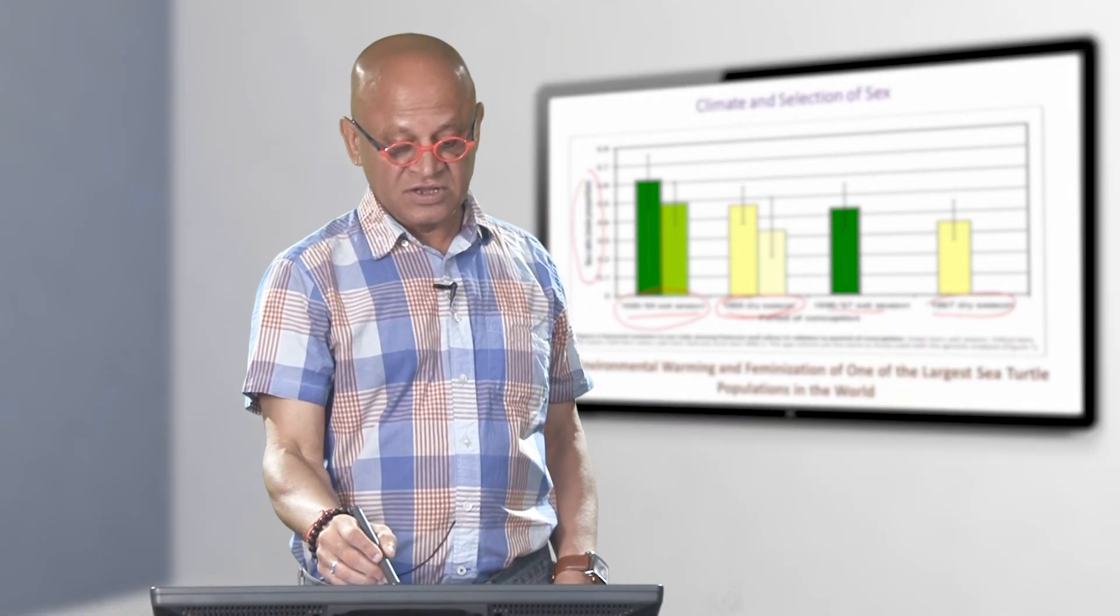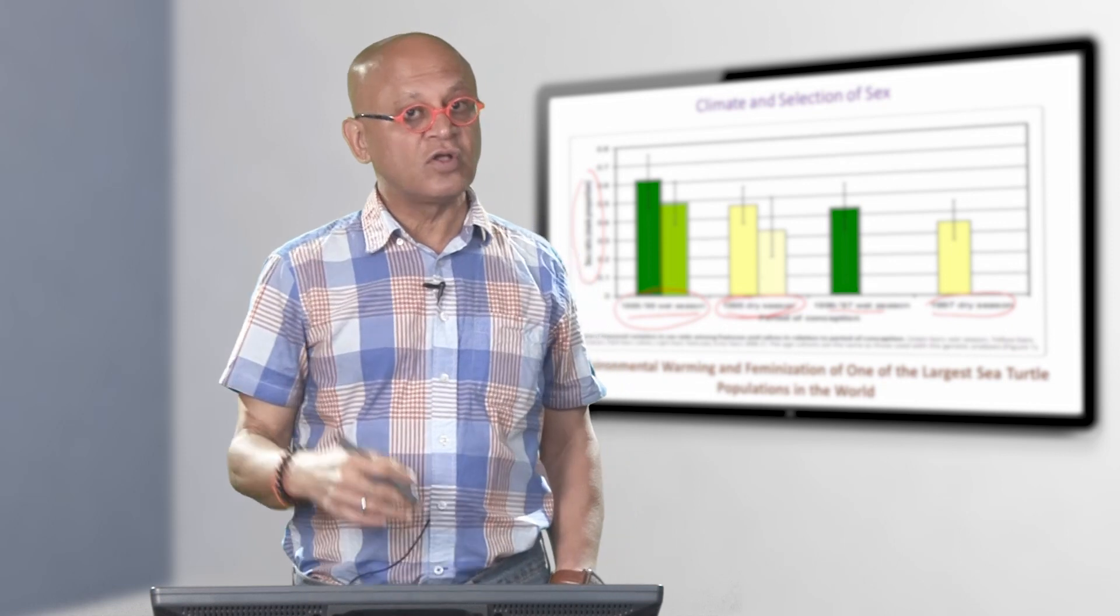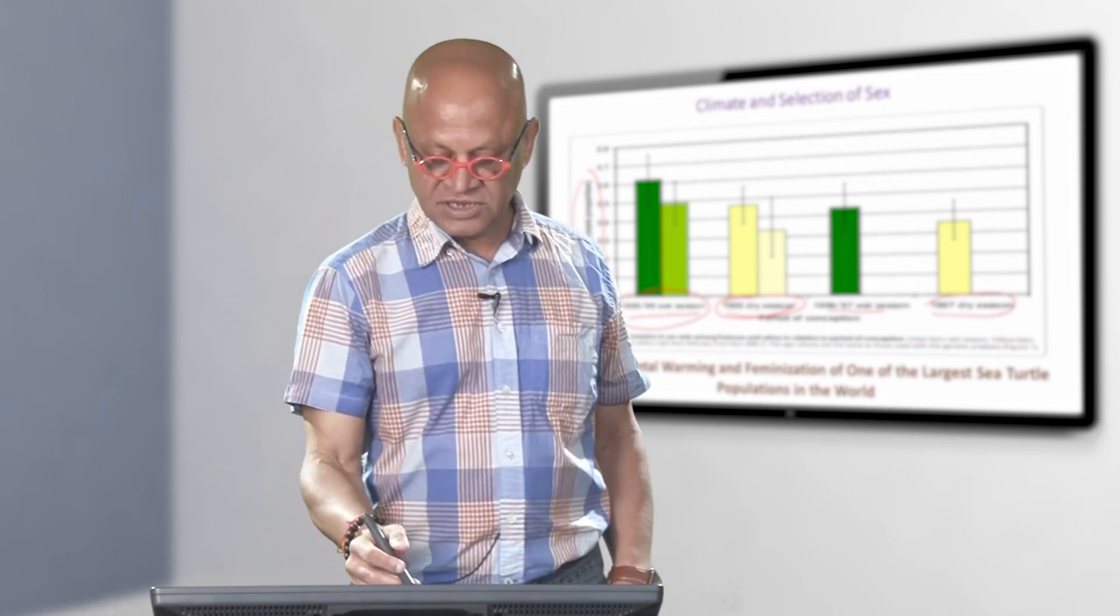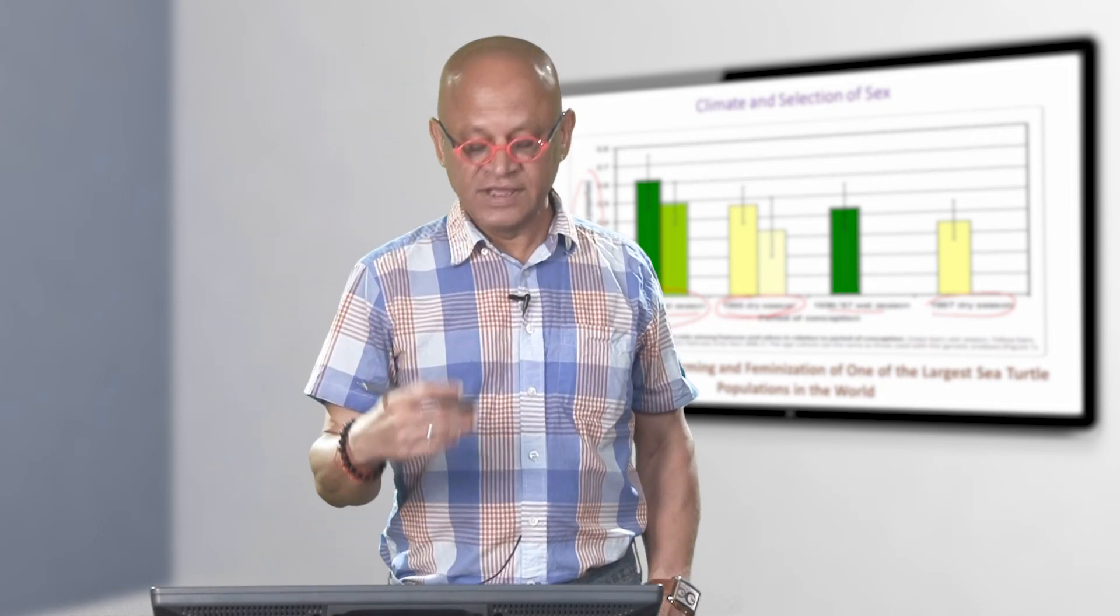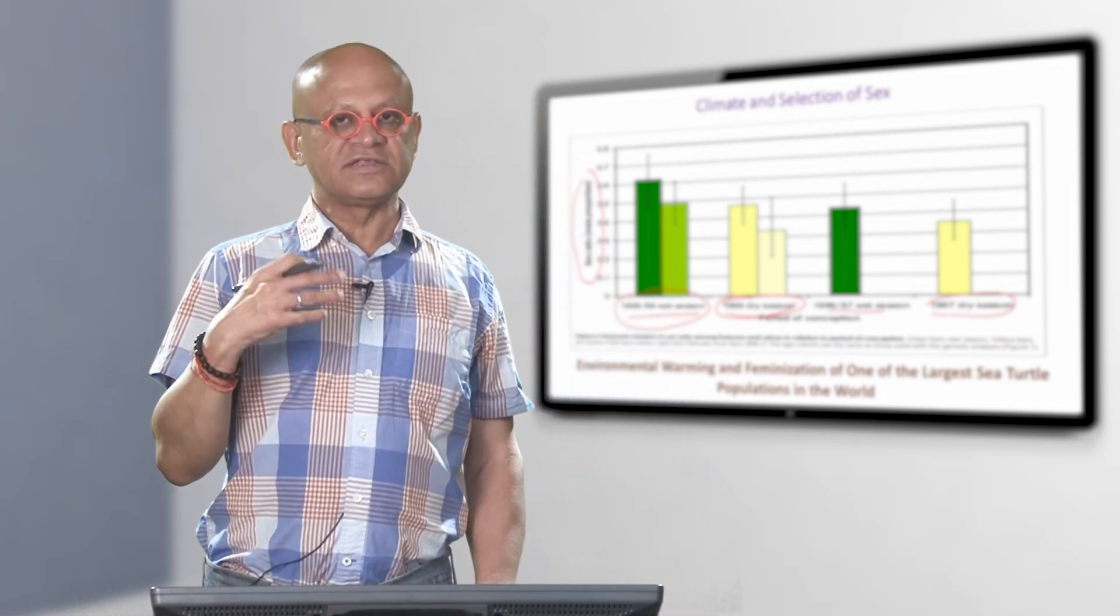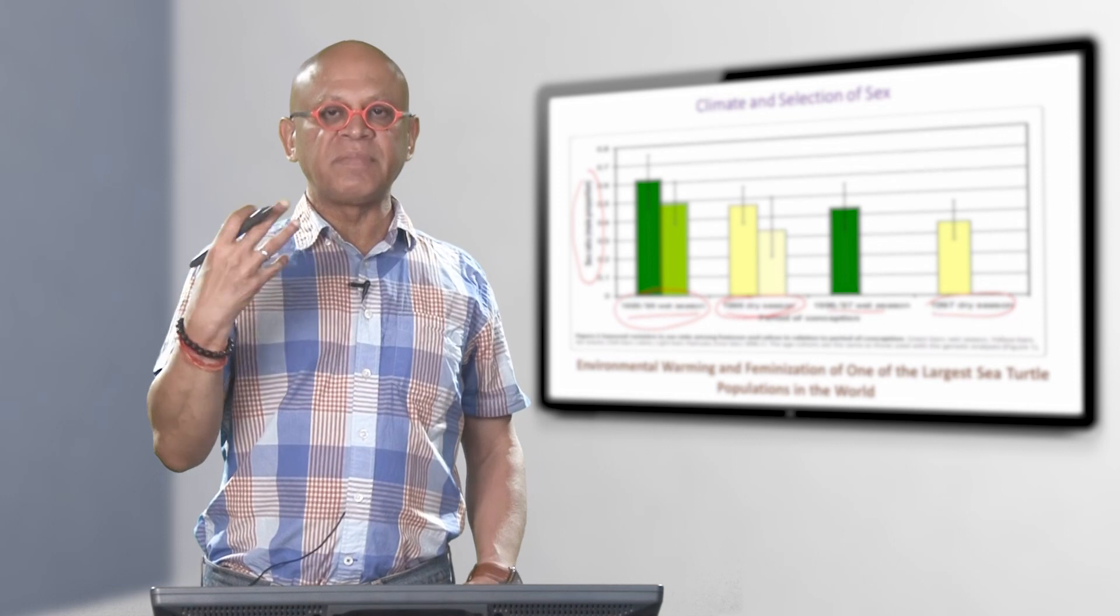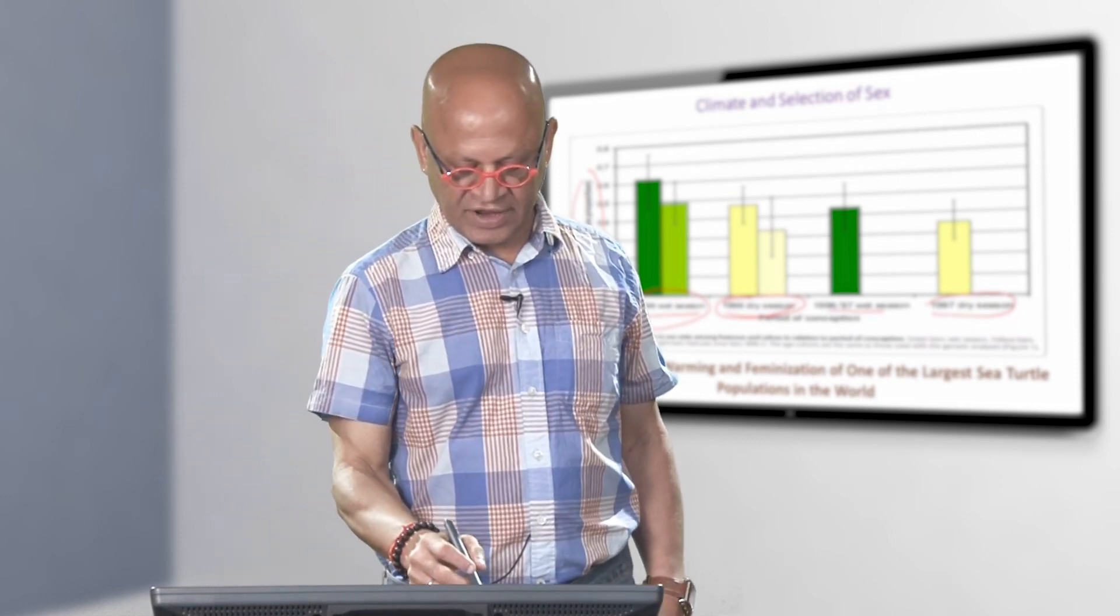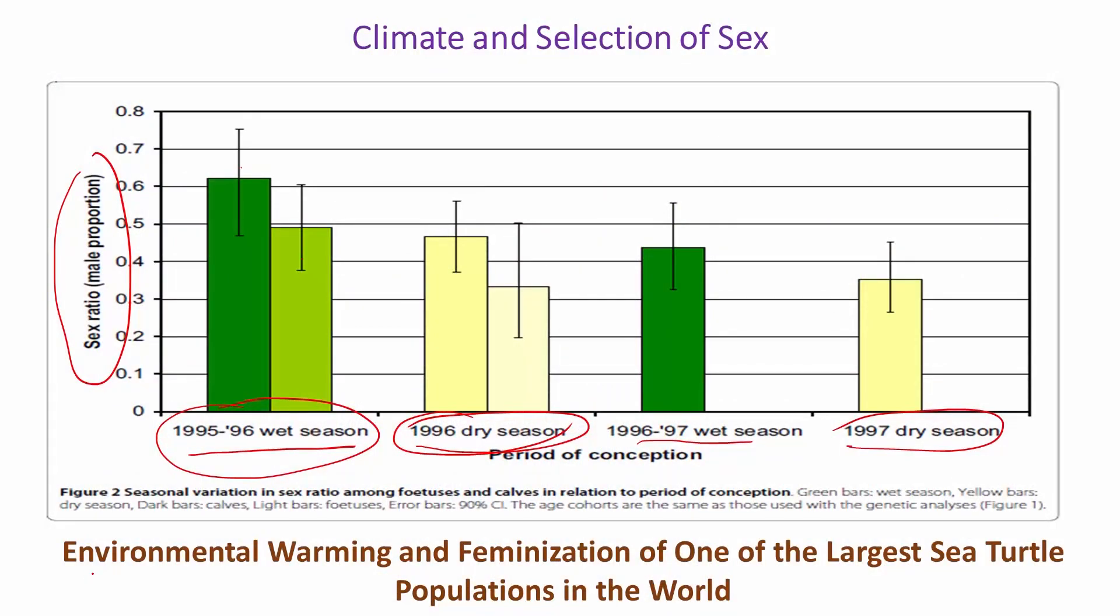So the survival of the fetus that grows up to be a calf also depends on the season and the availability of food. So there are biological reasons why the sex selection itself depends on environmental factors. One of the more severe impacts of this is seen in the impact of global warming on so called feminization of one of the largest sea turtle populations all over the world.